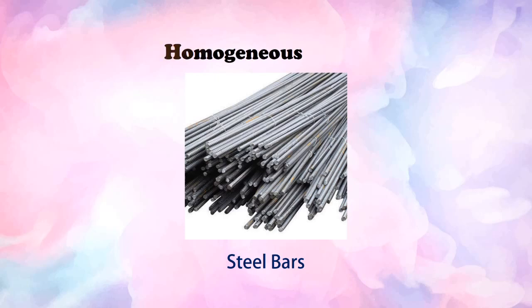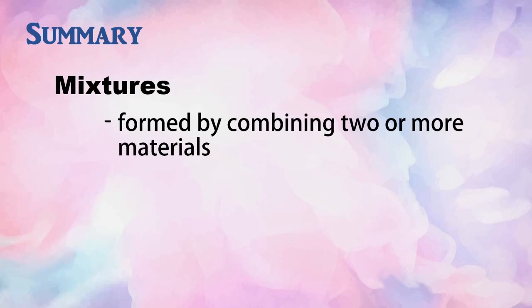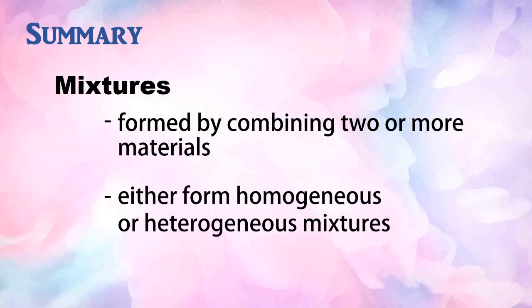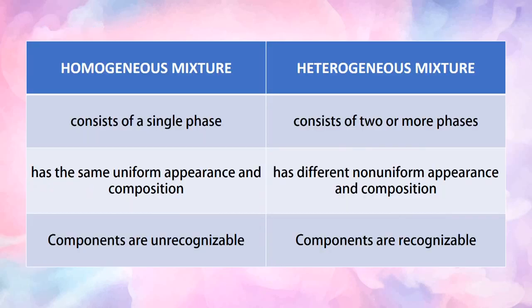Let us summarize what you have learned. Mixtures are formed by combining two or more materials. Mixtures either form homogeneous or heterogeneous mixtures. To differentiate: a homogeneous mixture consists of a single phase, while a heterogeneous mixture consists of two or more phases. A homogeneous mixture has the same uniform appearance and composition, while a heterogeneous mixture has a non-uniform appearance and composition.